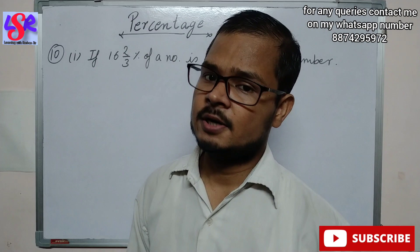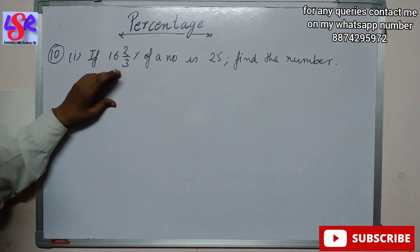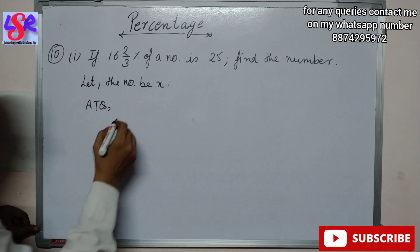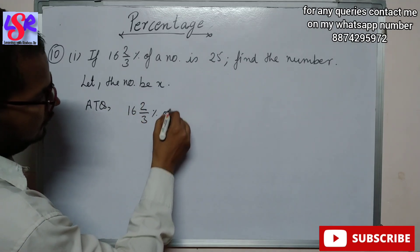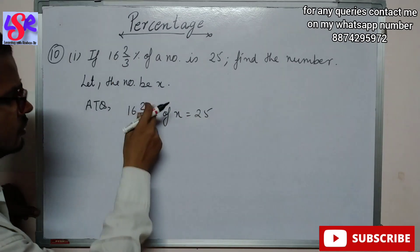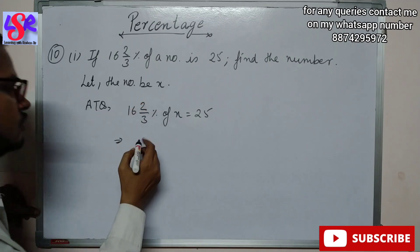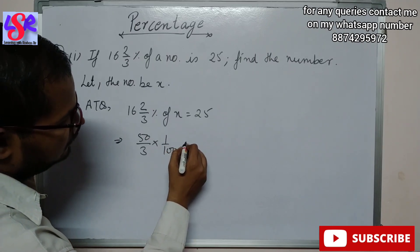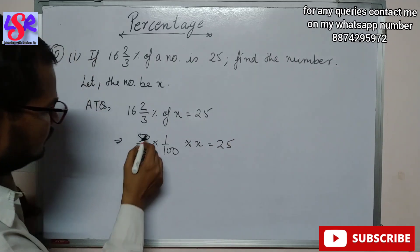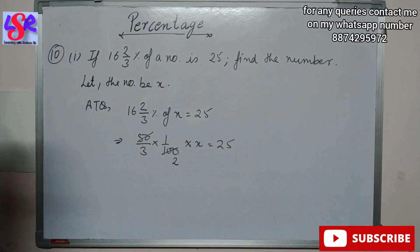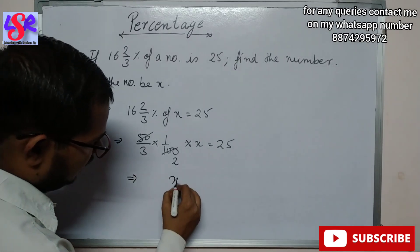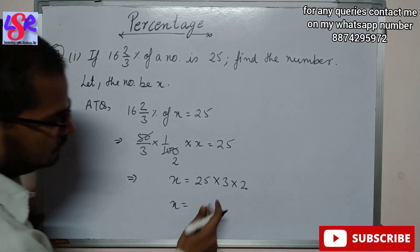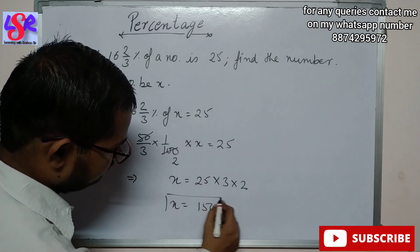Now we have Question 10. Here we have to find the number whose 16 whole 2/3 percent is 25. Let the number be x. According to the question, 16 whole 2/3 percent of x equals 25. Converting 16 whole 2/3 to improper form: 16 into 3 is 48, plus 2 is 50, giving 50 upon 3 percent. Removing the percent: 50 upon 300 into x equals 25. Simplifying, x equals 25 into 3 into 2, which is 150 as the required number.